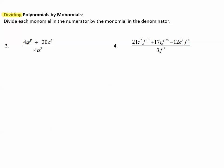Number 3 says 4a⁵ + 20a⁷ divided by 4a⁵. So we'll take this monomial, 4a⁵, and we'll divide it into both terms of the numerator. So it will look like this.